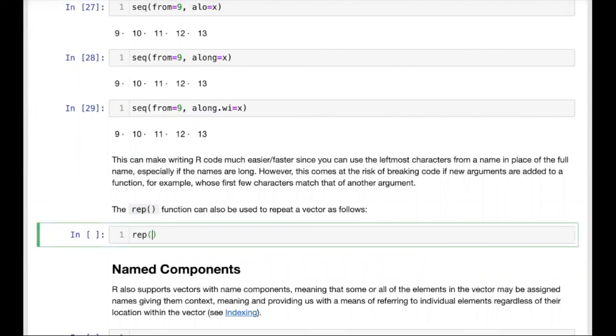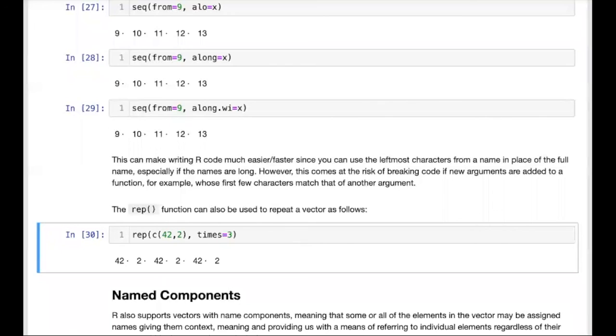And we see here in the output that we have a vector that has 6 elements consisting of 42 and 2 repeated 3 times.